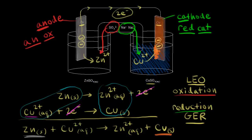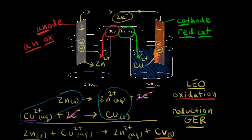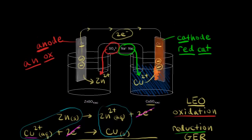Now let's think about shorthand notation. It's annoying to draw out the full picture every time you want to represent a voltaic cell, so there's a shorthand notation. First, you put your anode — solid zinc — on the far left. Then you draw a single vertical line representing the phase boundary between solid zinc and the aqueous solution of Zn²⁺ ions, and write Zn²⁺.